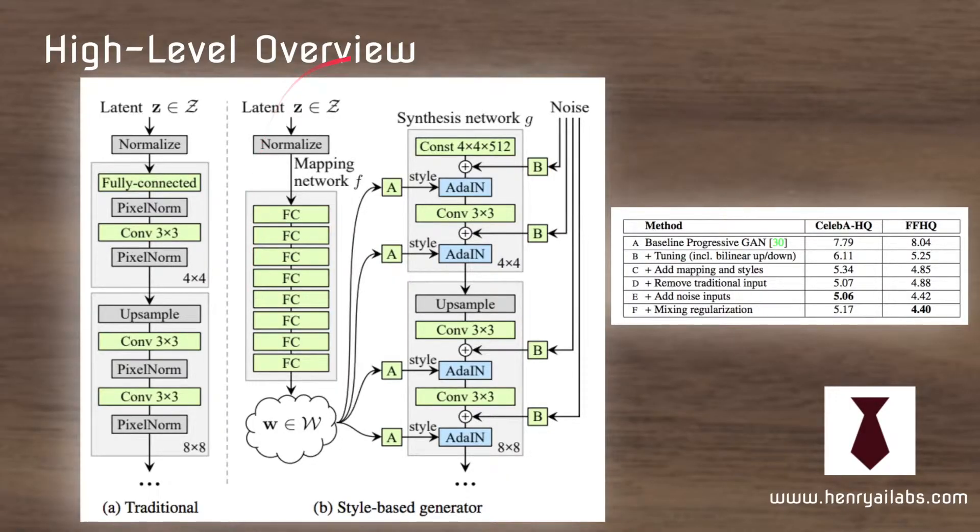So this is the high-level overview of the StyleGAN model compared to the traditional GAN framework. Well not the traditional but their previous progressively growing GAN model which works in a multi-scale way. So first you generate a 4x4 image then an 8x8 and then you follow this powers of two upsampling process until you get to the 1024x1024 high resolution face images we just saw.